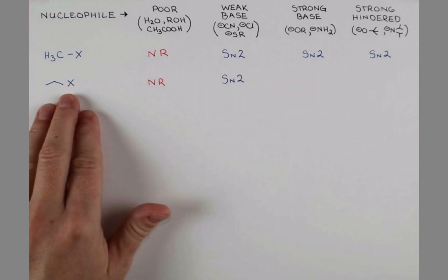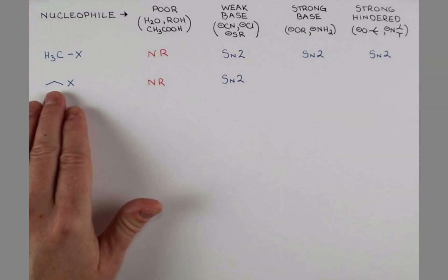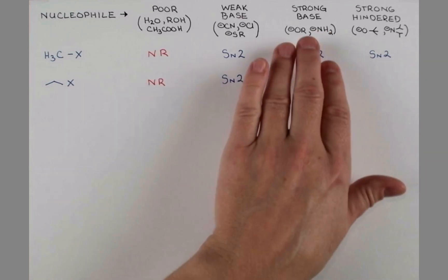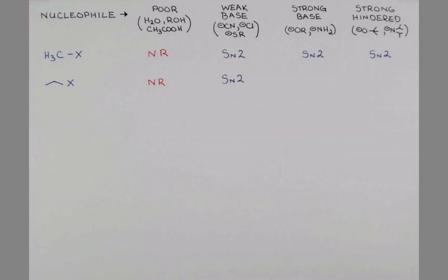Being unhindered like this, even with a strong base, we're going to get substitution here. In fact, if X is a halide and OR is, say, sodium methoxide, that's the Williamson ether synthesis reaction.